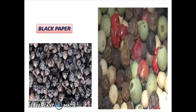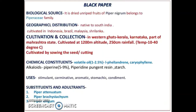The next drug is Black Pepper. Biological source: dried unripe fruits of Piper nigrum, belonging to family Piperaceae. Geographical source: native to South India, cultivated in Indonesia, Brazil, Malaysia, and Sri Lanka.